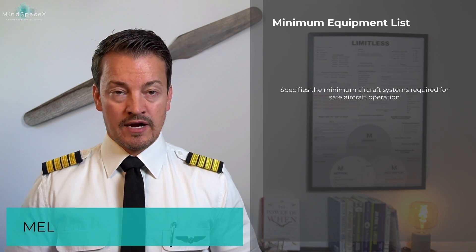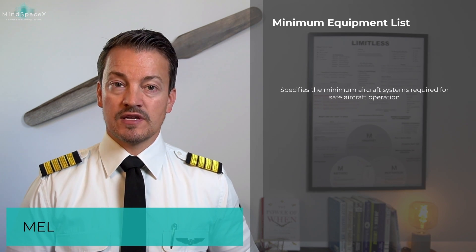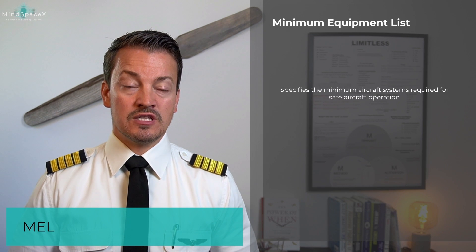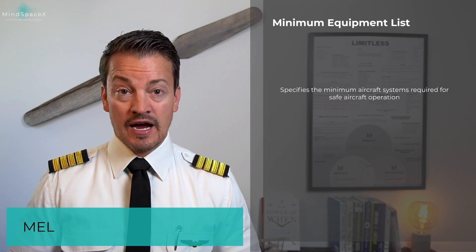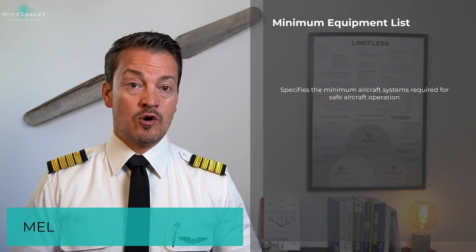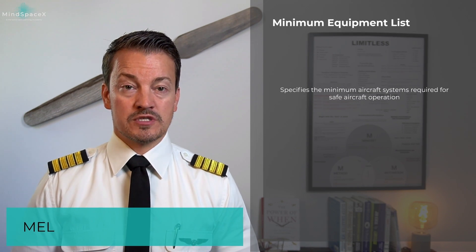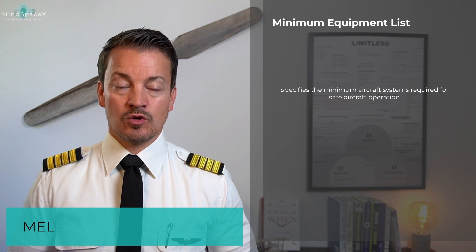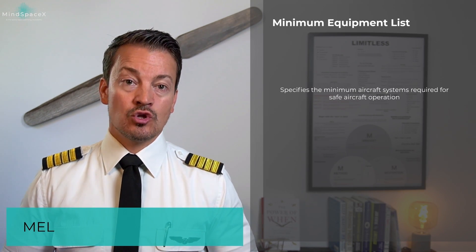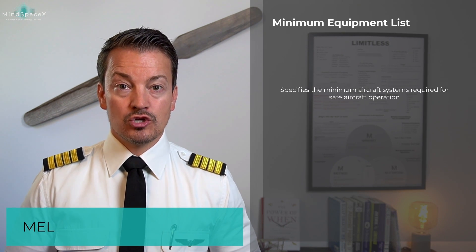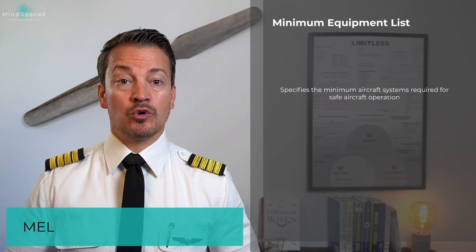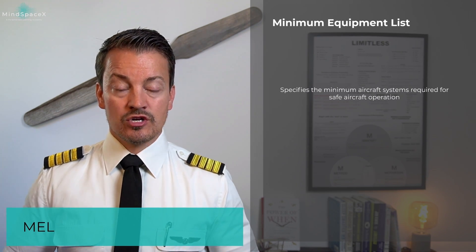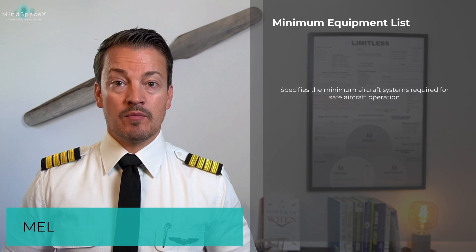Minimum equipment lists exist for all aircraft, but they are very simple for small aircraft and mostly relate to the requirements of operational equipment — VFR flying, IFR flying, aerobatic purposes, instructional purposes, flight training, etc. But when an aircraft becomes complex like the one we are operating, it is no longer up to the individual pilots to identify if certain things can be inoperable or not. Therefore, the manufacturer and the operator work together to specify these things in what we call a minimum equipment list.